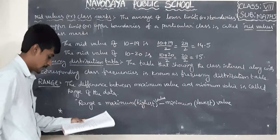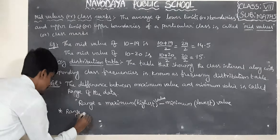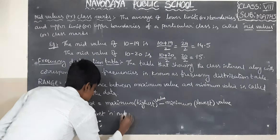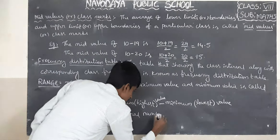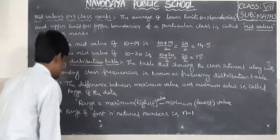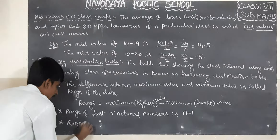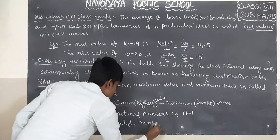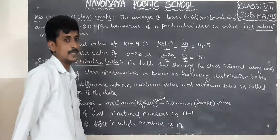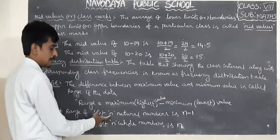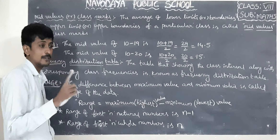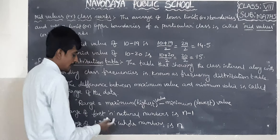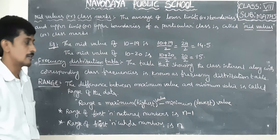For whole numbers, the maximum is n and the minimum is 0. So range equals n minus 0, which equals n. For first n natural numbers: range = n − 1. For first n whole numbers: range = n.